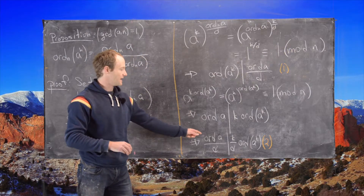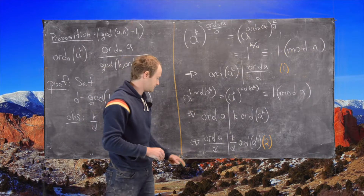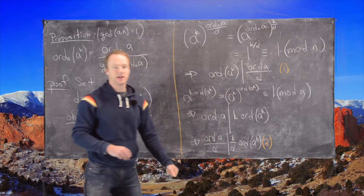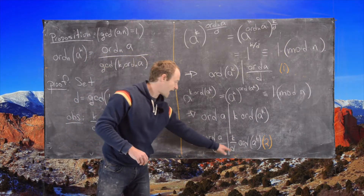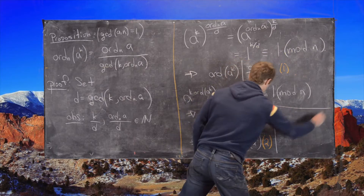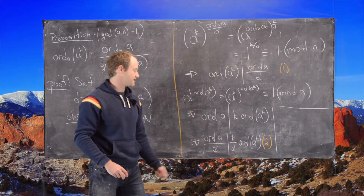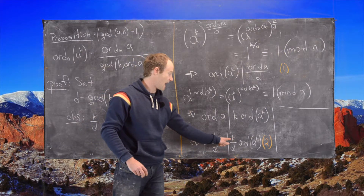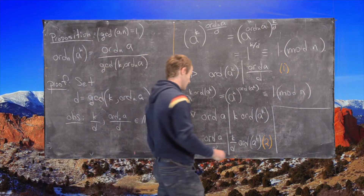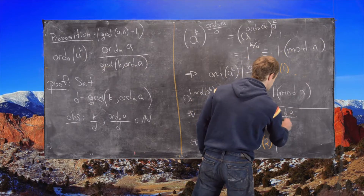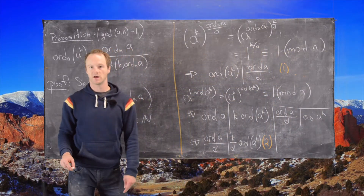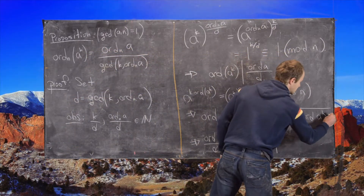Now, the order of a divided by d and k over d are relatively prime, because we've divided out their greatest common divisor. So in equation 2, since gcd(ord(a)/d, k/d) = 1, the factor k over d can be cancelled. The order of a over d cannot divide k over d, so it must divide the other factor — meaning the order of a over d must divide the order of a to the k. We label this equation 3.